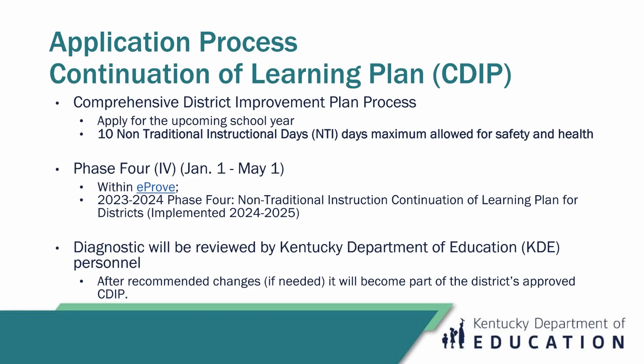You do that through eProof. The link is here on the PowerPoint and it should be named this year 2023-2024 phase four non-traditional instruction continuation of learning plan for districts implemented 2024-2025. You're always applying for the year coming up, not the current one.